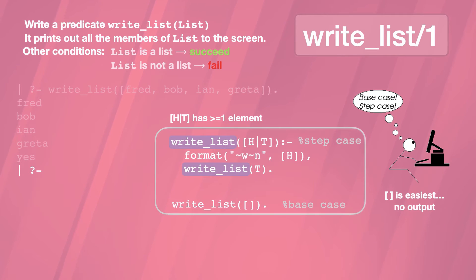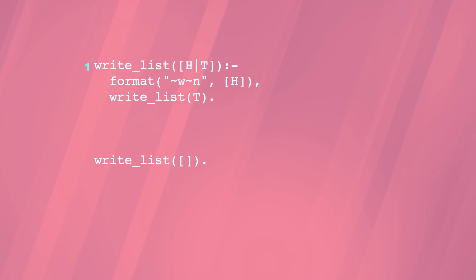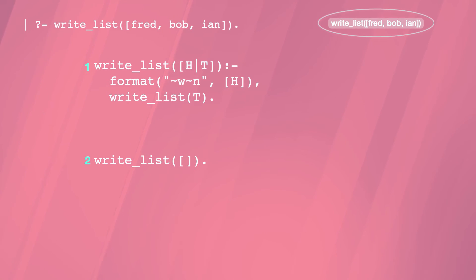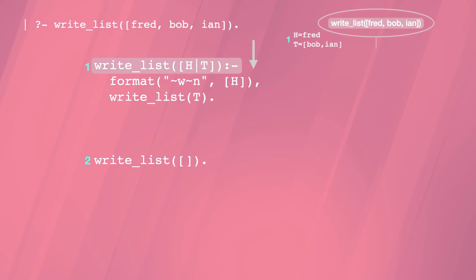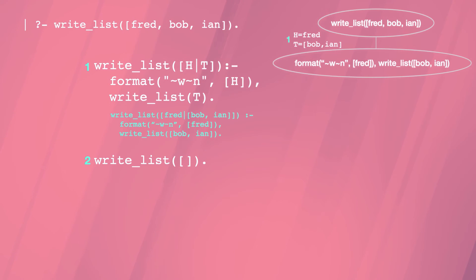Defining predicates in this way makes good use of Prolog's search and matching. Let's see how Prolog runs the program. First we add numbers to the clauses, and imagine that we have this query with a list of length 3. To prove this goal, Prolog searches from the top of the program. It matches against the head of the rule, giving these variable bindings. These instantiate the rule, so the body of the rule gives two new goals to prove.